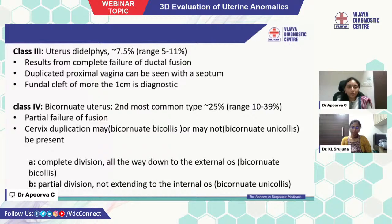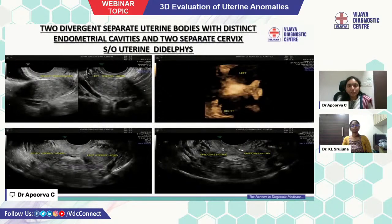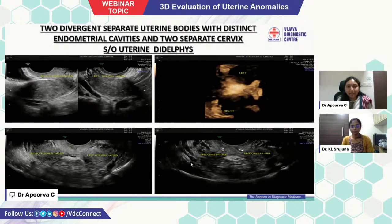Class 4 is bicornuate uterus — the second most common type, ranging around 25%. It is partial failure of fusion; cervix duplication may or may not be present. It is divided into complete division all the way down to the external os, partial division not extending to the external os, and internal os. This is a case showing uterine didelphys, where two divergent separate uterine bodies with two separate endometrial cavities and two separate cervices can be seen, suggestive of uterine didelphys.